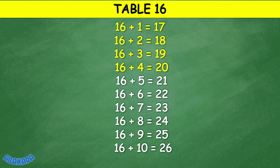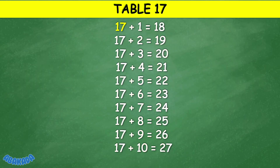Table 16: 16 plus 1 equals 17, 16 plus 2 equals 18, 16 plus 3 equals 19, 16 plus 4 equals 20, 16 plus 5 equals 21, 16 plus 6 equals 22, 16 plus 7 equals 23, 16 plus 8 equals 24, 16 plus 9 equals 25, 16 plus 10 equals 26.